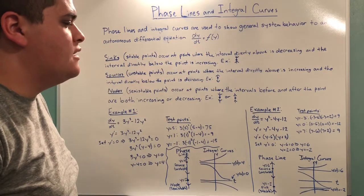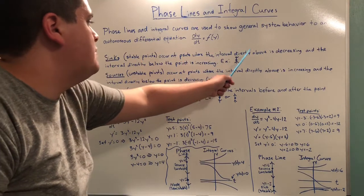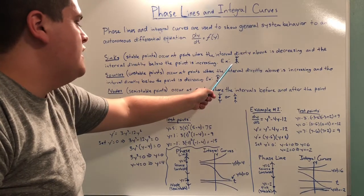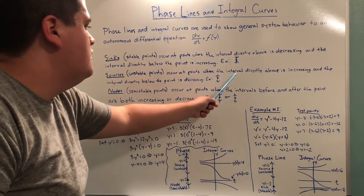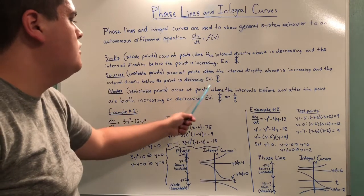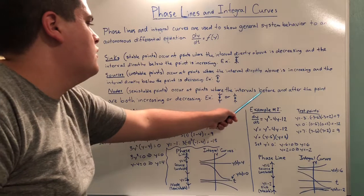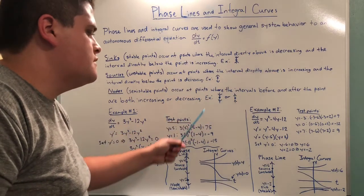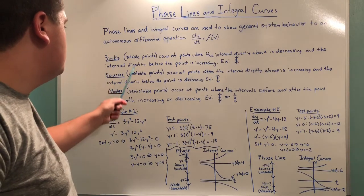When evaluating phase lines we need to know these three points. Sinks, also known as stable points, occur at points where the interval directly above is decreasing and the interval directly below the point is increasing — this is an example of what it would look like on a phase line. Sources, also known as unstable points, occur at points where the interval directly above is increasing and the interval directly below is decreasing. Nodes, also known as semi-stable points, occur at points where the intervals before and after the point are both increasing or both decreasing. Instructors may use either term, so it is often helpful to know both terms used for these points.